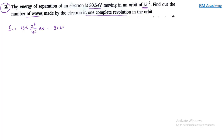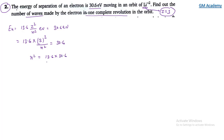Here we have 30.6 electron volt. For lithium, z value is 3. So we have 13.6 × 3² / n² equal to 30.6. Solving: 13.6 × 9 / 30.6 gives n² equal to 4, so n value is 2.